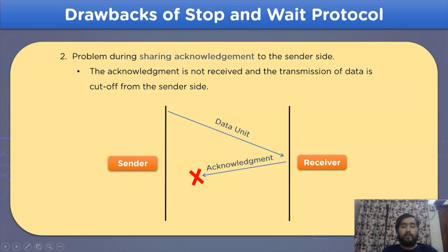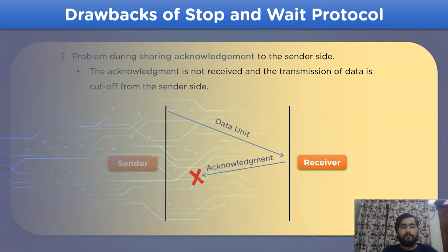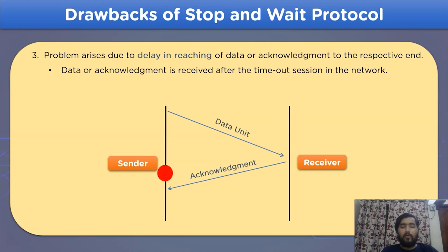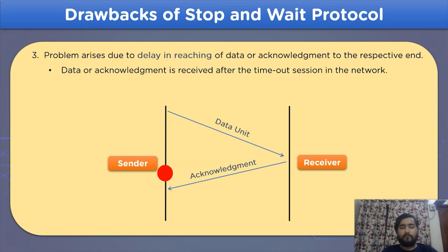The last drawback occurs due to delay in transmission time. The time delay drawback can occur on either side of the transmission — that is, during data transmission or during acknowledgement transmission. With this, the session on stop-and-wait protocol is complete.